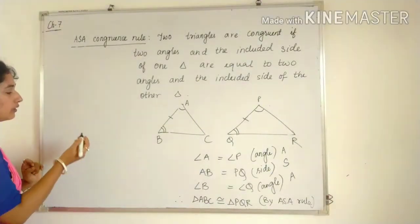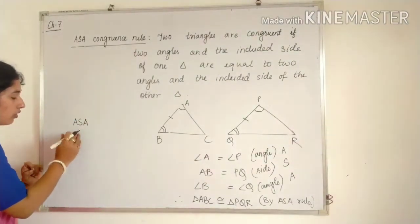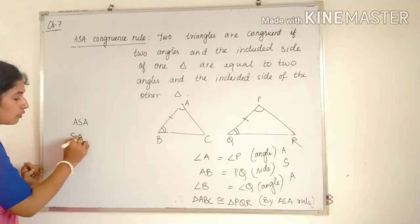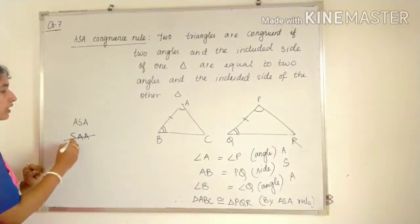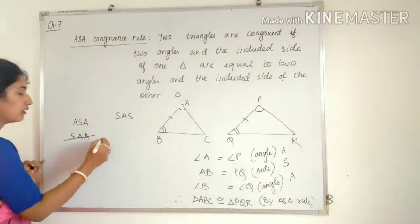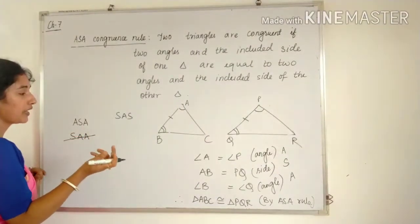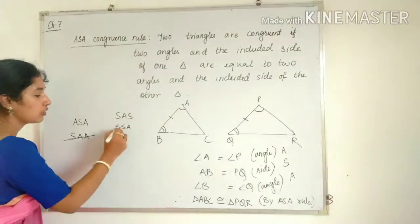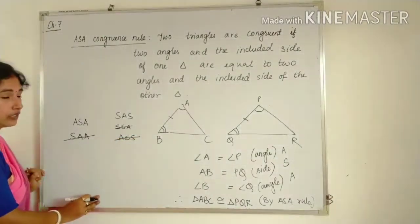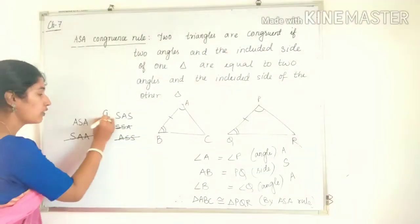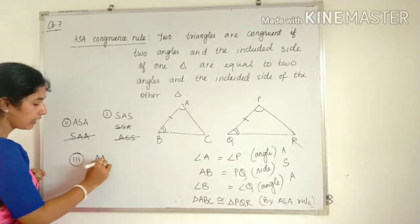One thing that may strike your mind: if ASA rule exists, can we say SAA also exists? No, that rule does not exist. Similarly, if SAA seems valid, you might think SSA also exists — but SSA rule is not there. Similarly, ASS rule is also not there. So our first rule is SAS, second is ASA. The third rule we are going to study is Angle-Angle-Side — AAS.